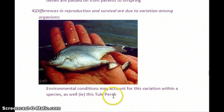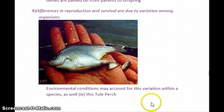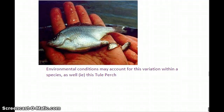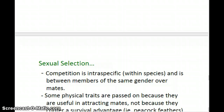Here's an interesting example: the twolay perch is a type of fish that can actually give live birth. There are environmental conditions that would account for this — giving live birth might be more advantageous for a fish than laying eggs under certain conditions. So the conditions mean a lot; they mean everything, in terms of what traits are going to be most favorable to an organism within its environment.